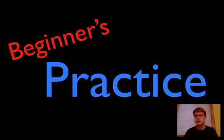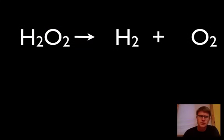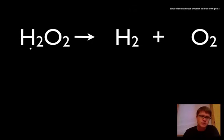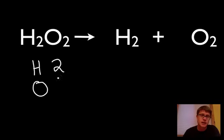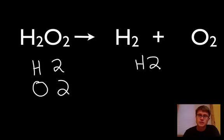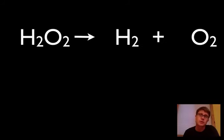The only way to get better is to practice. Let's try a few, and I'll show you how I think through this. The first one is H2O2, hydrogen peroxide, which breaks down into hydrogen gas and oxygen gas. On the left side we've got 2 hydrogens and 2 oxygens. On the right side, 2 hydrogens and 2 oxygens as well. This is already a balanced equation. What do you do if it's already balanced? You don't do anything — you'd write a 1 in front of each, but we never write 1, so leave it as is.